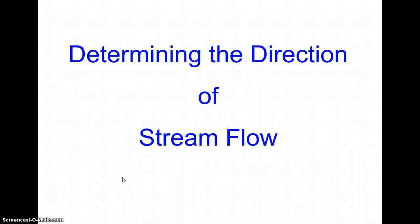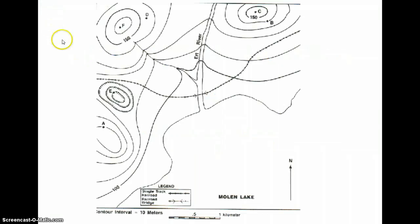So let's review how to determine which way a stream is flowing by looking at a topographic map. Okay, let's take a look at this map. Let's take a look at this stream that is flowing over here.